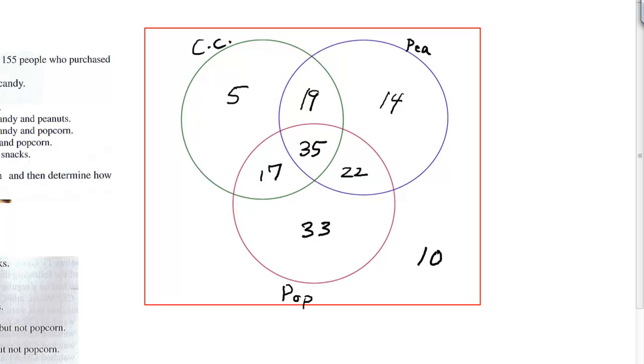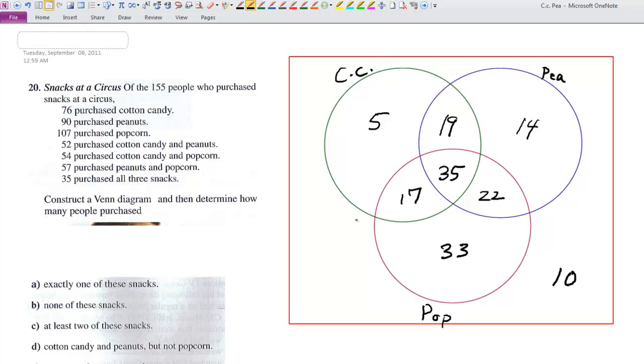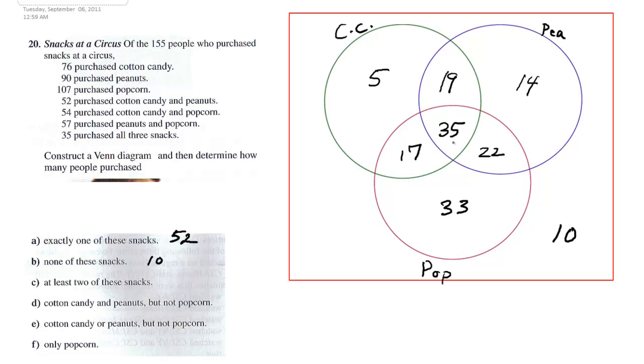All right. Now I can answer the question. The question, first question is how many purchased exactly one snack? Exactly one would be 5, 14, and 33. One of these snacks at least. So what's that? 19 and 33 is 52. None of the snacks. 10. At least two. So that's two or more. So we have 35 in the center. Then 36 makes 71. Plus 22 is 93. Cotton candy and peanuts, but not popcorn. Cotton candy and peanuts is in here, but not popcorn. So we leave those out. So the answer is just 19. Cotton candy or peanuts, but not popcorn. So or would normally be this whole thing is normally or. Right? The union.